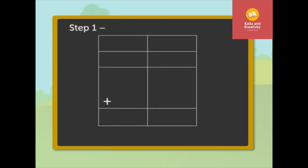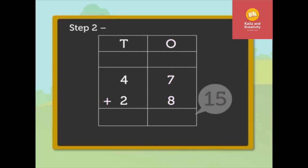Step 1: Write the numbers in the tens and ones columns. Step 2: Add the ones, that is, seven plus eight, is equal to fifteen.